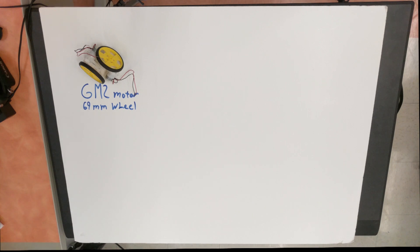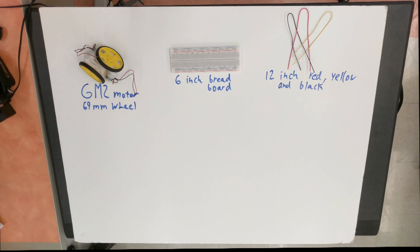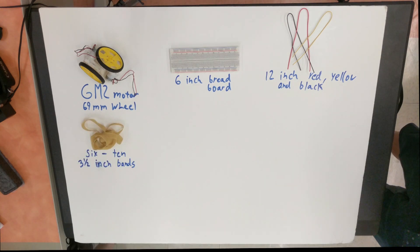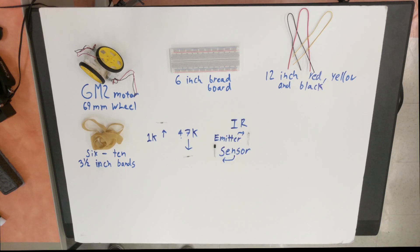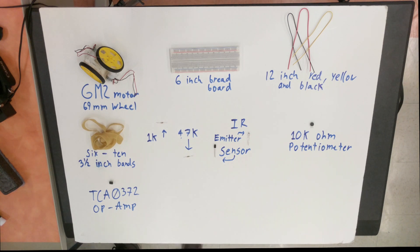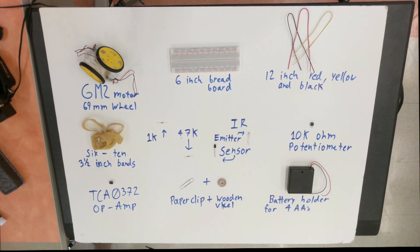Two GM2 motors with 69mm plastic wheels, one 6-inch breadboard, 12-inch of red, yellow, and black wire, 6-10 3.5-inch rubber bands, a 1,000-ohm and 47,000-ohm resistor, one infrared emitter and sensor, one 10,000-ohm potentiometer, one TCA-0372 operational amplifier chip, a paper clip, a wooden wheel, and one battery holder that holds four AA batteries, and wire cutters.